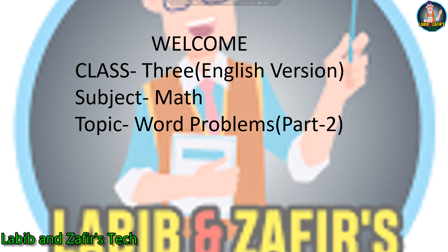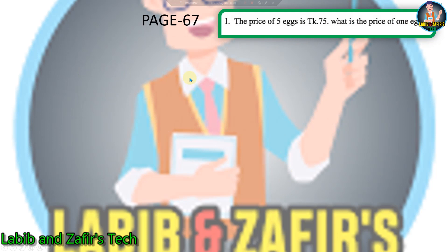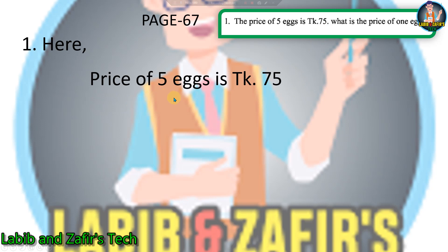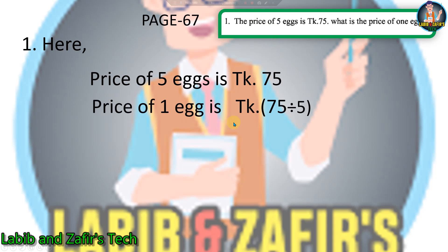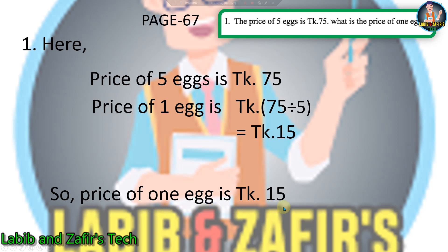We are now at page 67 and here is question number one: the price of 5 eggs is taka 75 — what is the price of one egg? We can see here 75 taka is the price of five eggs, so we have to find the price of one egg. We divide 75 by 5: price of one egg is taka 75 divided by 5, which equals taka 15.